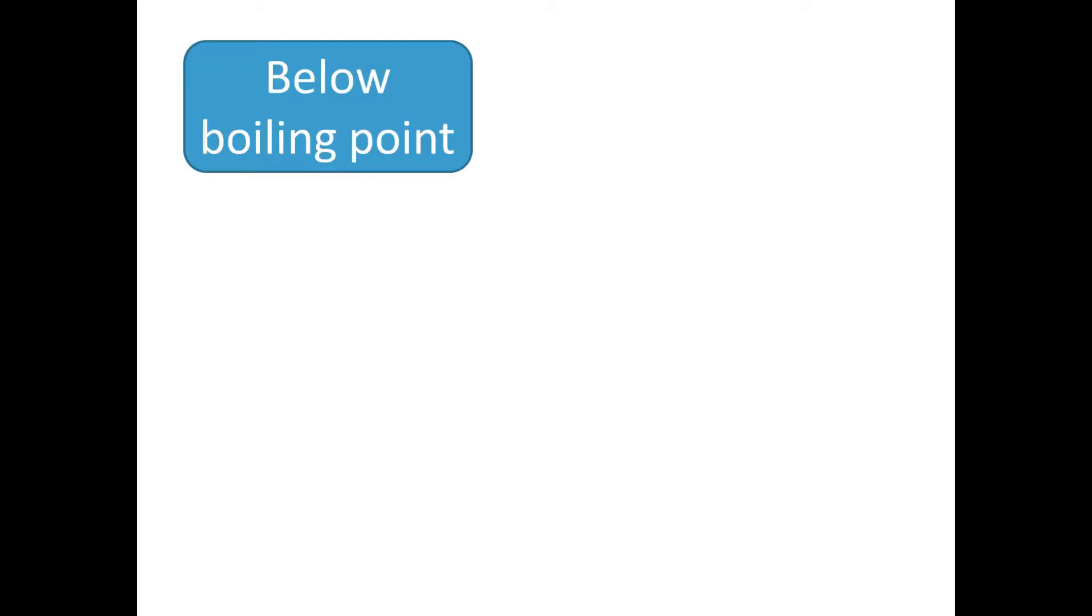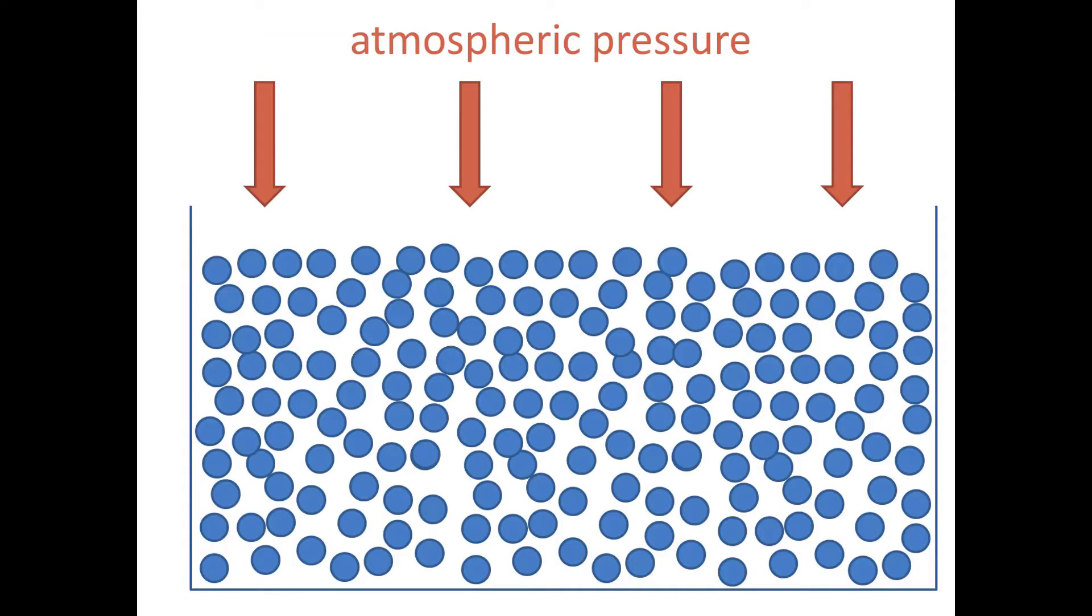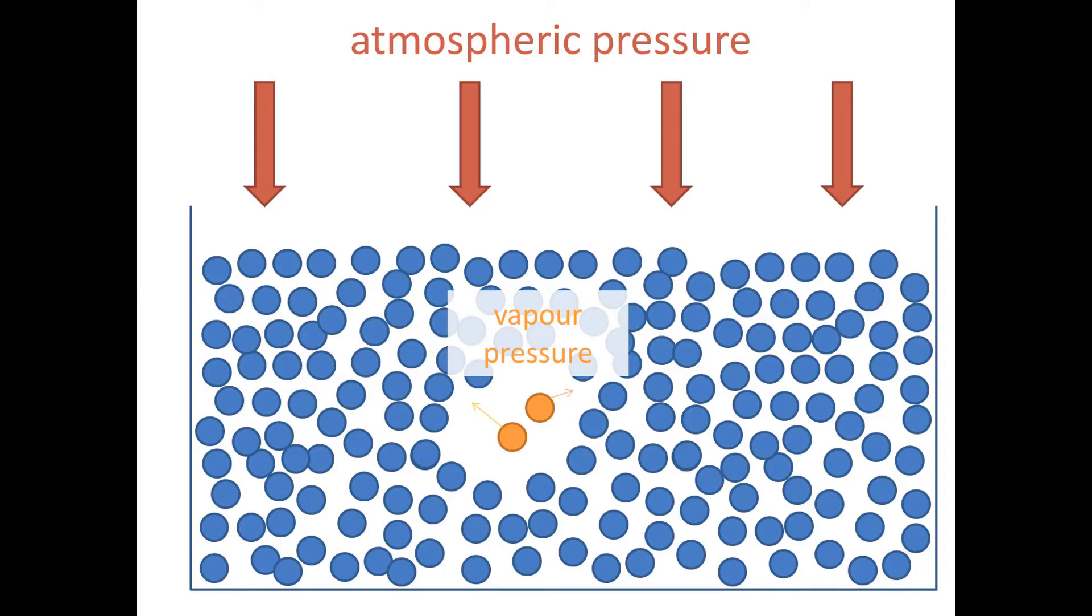However, at temperatures below boiling point, there are not many particles with enough kinetic energy to be able to do this. And so the vapor pressure that they exert in a little bubble that they form is so weak that atmospheric pressure squashes the bubble before it can even form, forcing the particles back into the liquid phase.